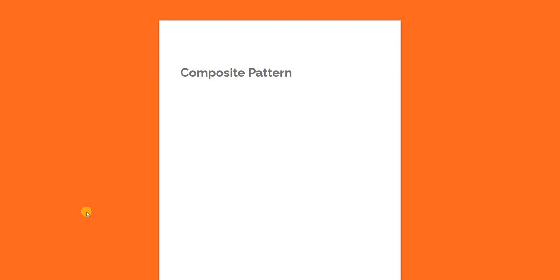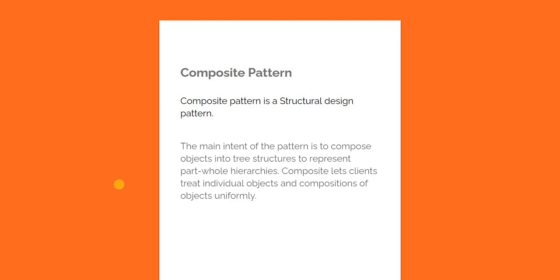Hello everyone and welcome to .NET Core Central. In today's video, I am going to talk about the composite design pattern. Composite design pattern is also a pattern from the Gang of Four design patterns. It is a structural design pattern. The main intent of this pattern is to compose objects into tree structures to represent part-whole hierarchies, letting clients treat individual objects and compositions of objects uniformly.